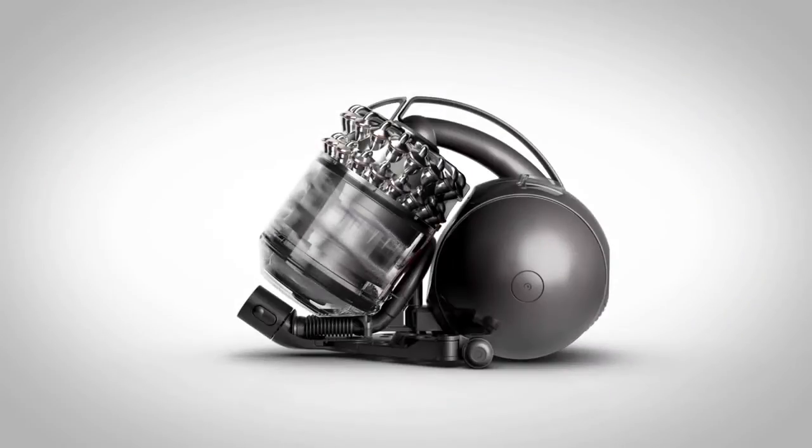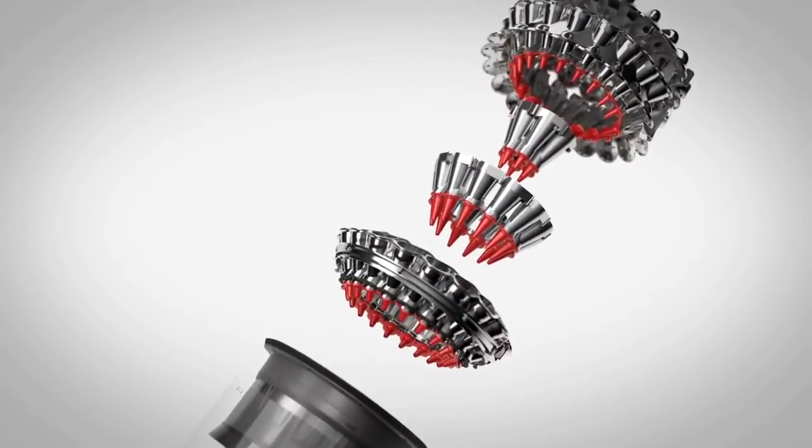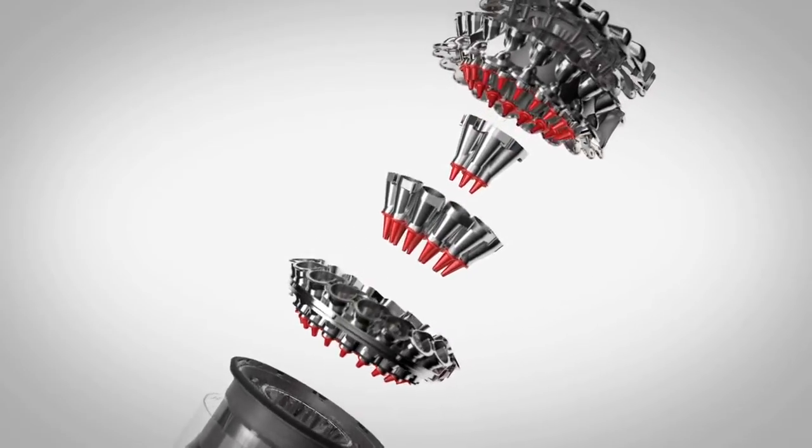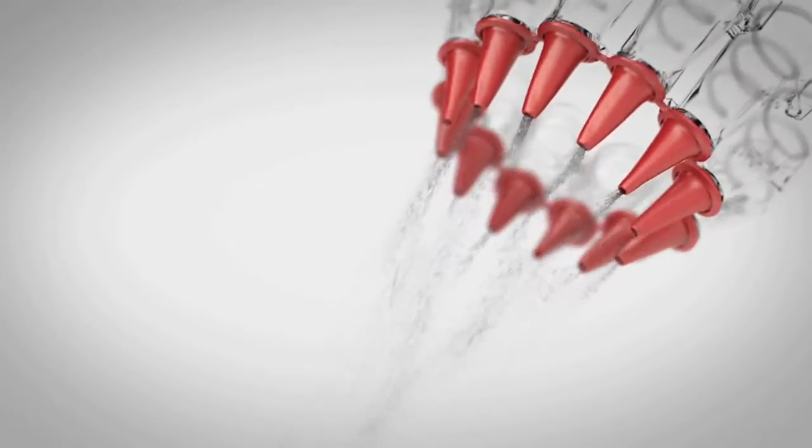High airflow is achieved by 54 small cyclones arranged on two levels. Each cyclone has a solid upper part and a flexible lower part, which oscillates at high frequency. The oscillation prevents the cyclone tip clogging with dust.